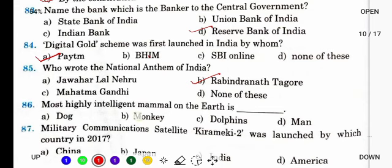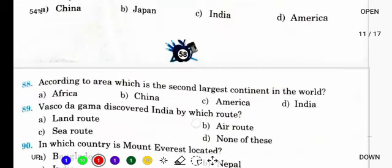Most highly intelligent mammal on the earth is? Earth पे सबसे intelligent mammal कौन है? Man — हम लोग सबसे ज़्यादा intelligent हैं और हम mammal हैं.